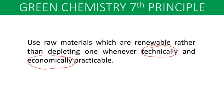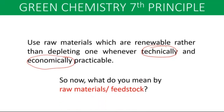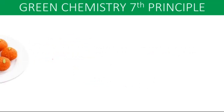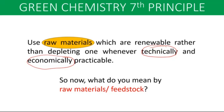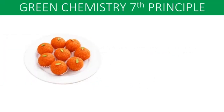We have to use raw materials which are renewable rather than depleting ones, whenever technically and economically practicable. Now, what does it mean by raw materials or feedstock? Raw material or feedstock is not the final product — it is the basic or semi-basic ingredient which can be converted into a particular final product. So raw materials or feedstocks are ingredients which can be converted into the final product.